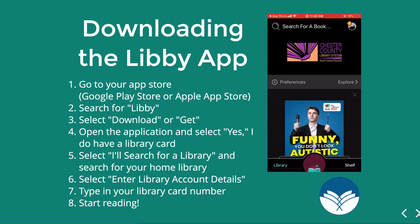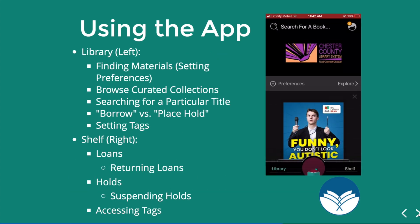This here is the interface you're going to use to download books. Now I'm going to show you how to use the app. There are three different functions at the bottom: you have Library, Shelf on the right-hand side, and then in the middle you have the little Libby icon — that's your currently reading section. To start, I'm going to show you how to use the library section, which is where you find materials.